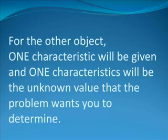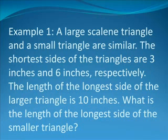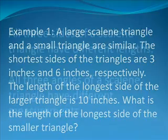Example number one: A large scalene triangle and a small triangle are similar. The shortest sides of the triangles are three inches and six inches, respectively. The length of the longest side of the larger triangle is 10 inches. What is the length of the longest side of the smaller triangle?